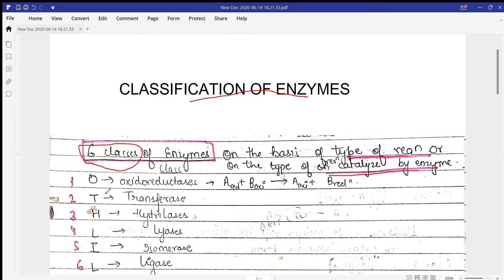I've written the first letter of these enzyme classes: OTHLI. You can remember this easily by 'oath little.' O stands for oxidoreductase, T is for transferase, H is for hydrolases, L stands for lyases, I stands for isomerases, and the last class L is for ligases.